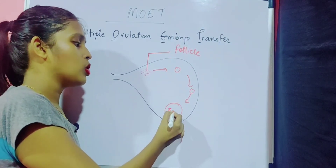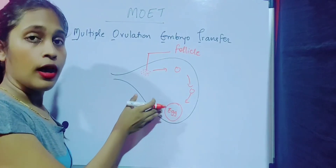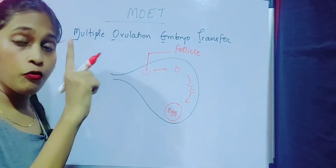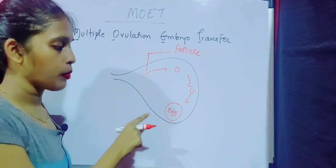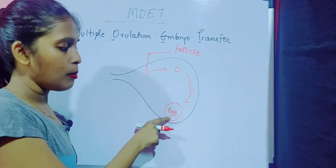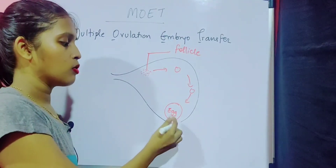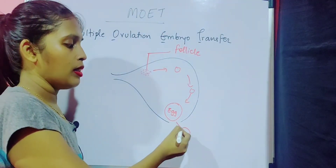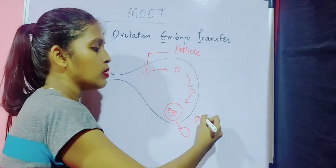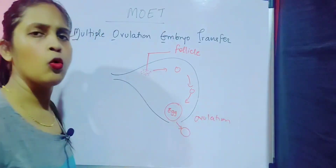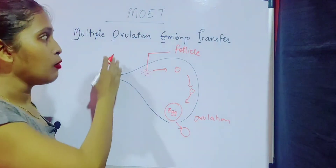After this process, there will be formation of an egg with the help of the follicle. When the maturation of the egg is happening and the egg is going to leave the ovary, that particular process is called ovulation. So ovulation is basically the maturing and release of the egg.